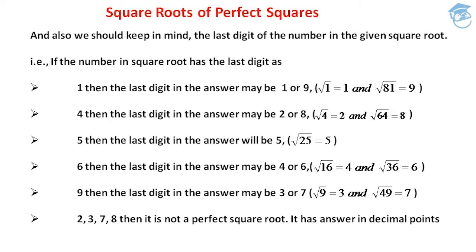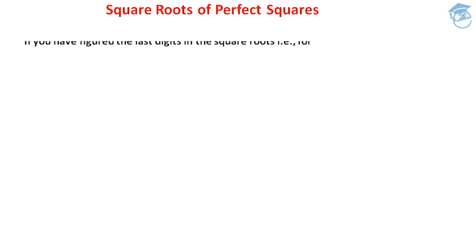One more thing to keep in mind: whenever the last digit under the square root is 2, 3, 7, or 8, then it is not a perfect square — it doesn't have an exact square root and we get the answer in decimal points. Also, except for 5, all other valid last digits give two possible digits as the answer.